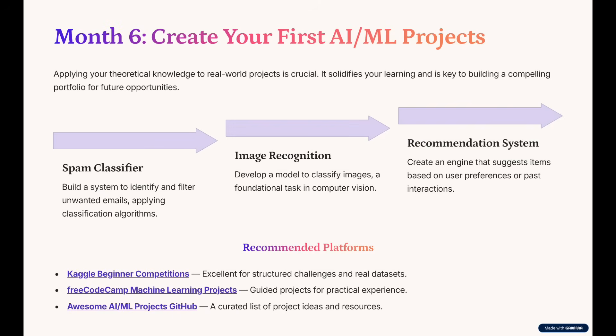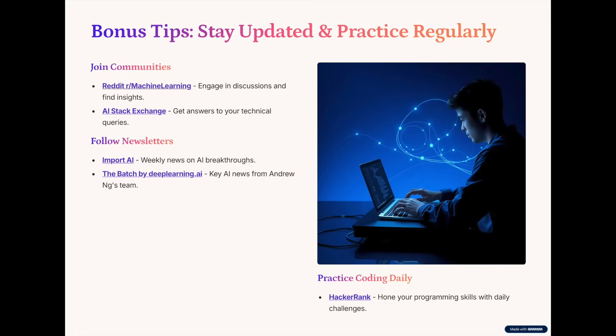Next, you have to start building projects and learn about deployments and real-world AI. You need to know how to train and deploy ML models using Flask, Streamlit, or Gradio, and how to use Google Colab and Hugging Face Spaces. You also need to know how to work with APIs — such as OpenAI APIs, Gemini APIs, or LangChain. At this point, you should also know how to build AI agents using tools like LangChain, Flowise, or AutoGen.